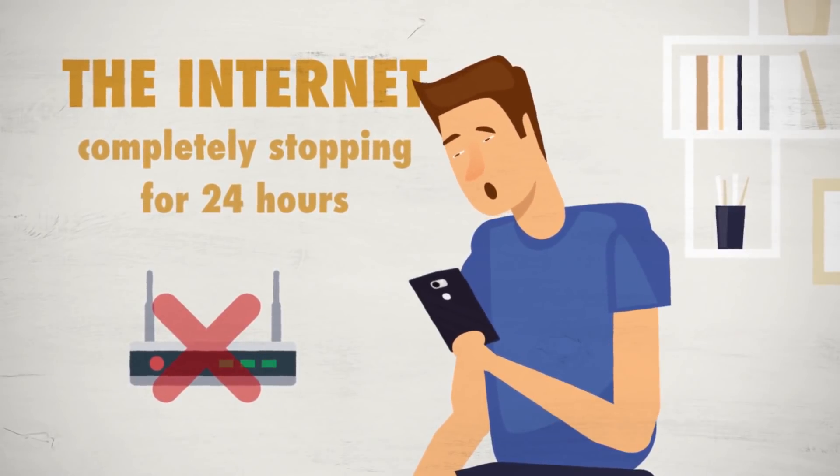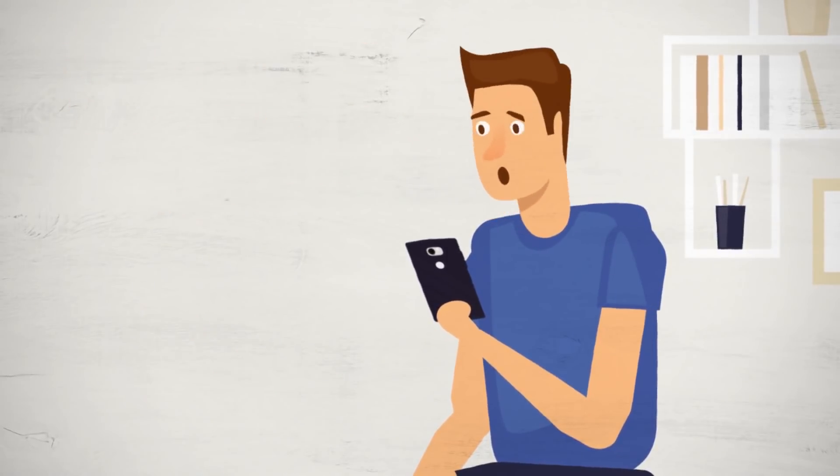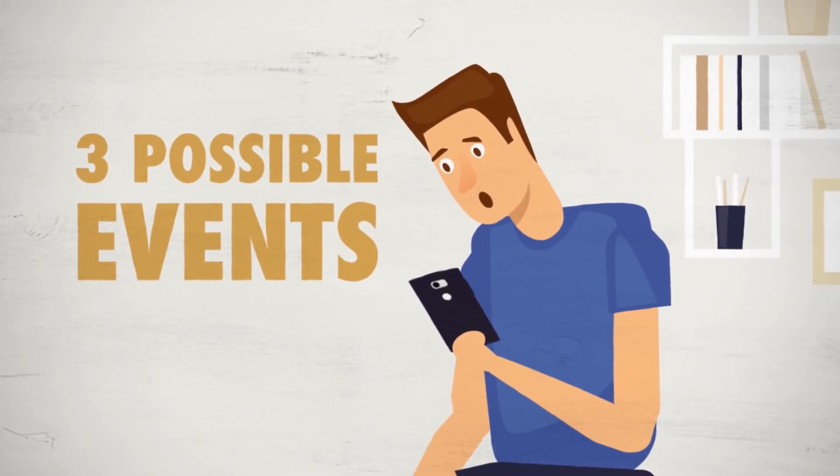While in this day and age there are multiple fail-safe systems in place to prevent this event from happening, in this video we're going to explore three possible events that could happen in the event that the internet really does break down and leaves us all in the dark.